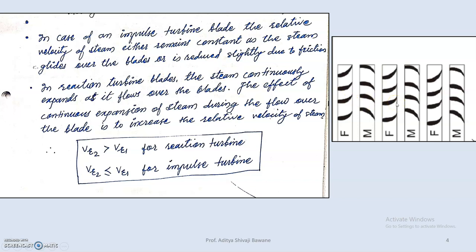In the case of a reaction turbine, whenever steam moves over the fixed and moving blades it continuously expands due to the aerofoil shape. The effect of this continuous expansion of steam during flow over the blade is to increase the relative velocity of steam. So in a reaction turbine the relative velocity goes on increasing. This is the distinguishing factor: if relative velocity is greater at outlet it is a reaction turbine; if it is smaller at outlet it is an impulse turbine.